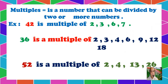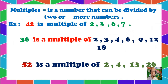Next number, we have 52. 52 is a multiple of 2, 4, 13, and 26. How do we know? This number is a multiple of 2 because it can be divided by 2 exactly without remainder. It can also be divided by 4 exactly without remainder: 52 divided by 4 gives 13. 13 is a factor of 52 because if you multiply 4 times 13 you get 52. And 26 is one-half of 52. So this is what we call multiples — a number that can be divided by 2 or more numbers.